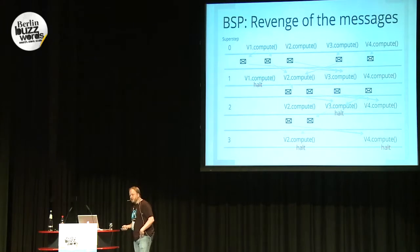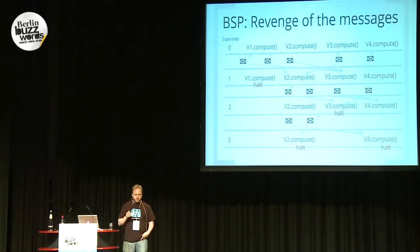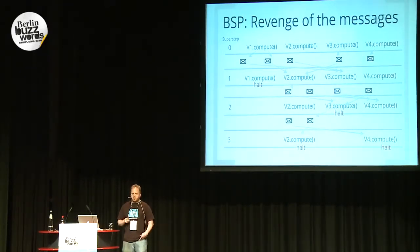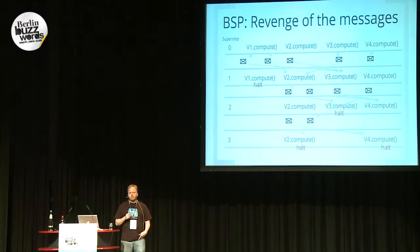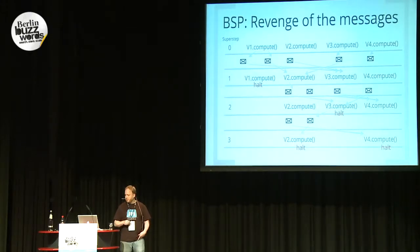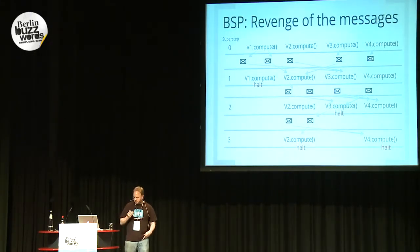What does this look like in practice? People familiar with bulk synchronous processing will recognize this as a certain type of BSP. We have a lot of processing going on moving in bulk synchronized steps. Here we're looking at four super steps with four vertices. In super step 0 they all do some computing and some of them send messages — vertex 1 sends a message to vertex 3, and vertex 3 sends a message to vertex 2. All of those messages arrive in super step 1.